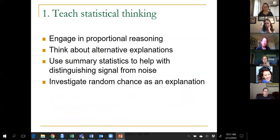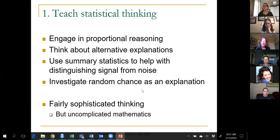These two examples involve proportional reasoning, thinking about alternative explanations, using summary statistics, and investigating random chance as an explanation. There's fairly sophisticated statistical thinking going on with very uncomplicated math. I present these examples often on the first day of a statistical literacy class. That's recommendation one: teach statistical thinking.